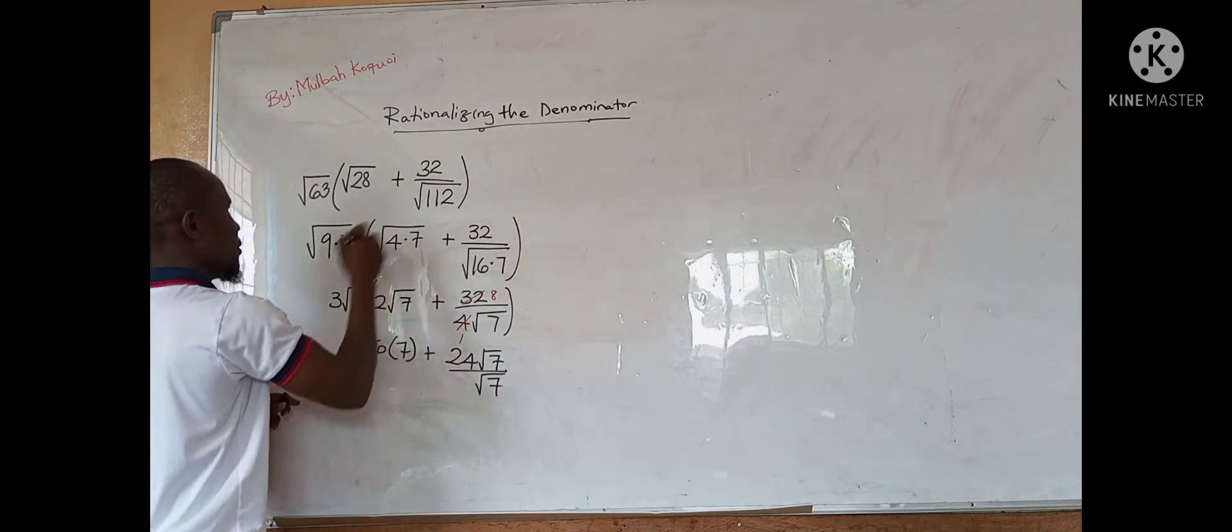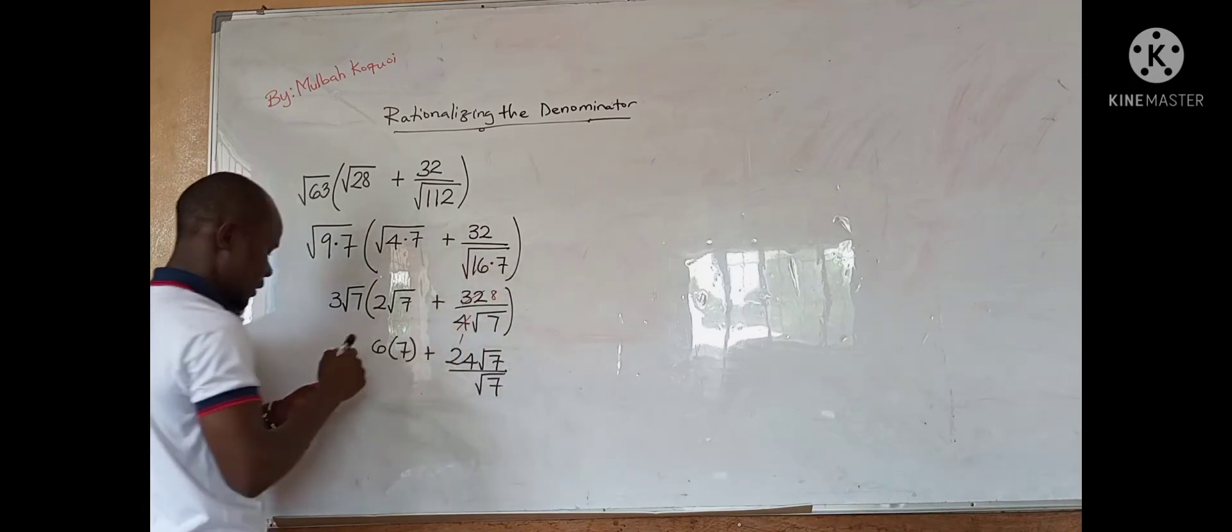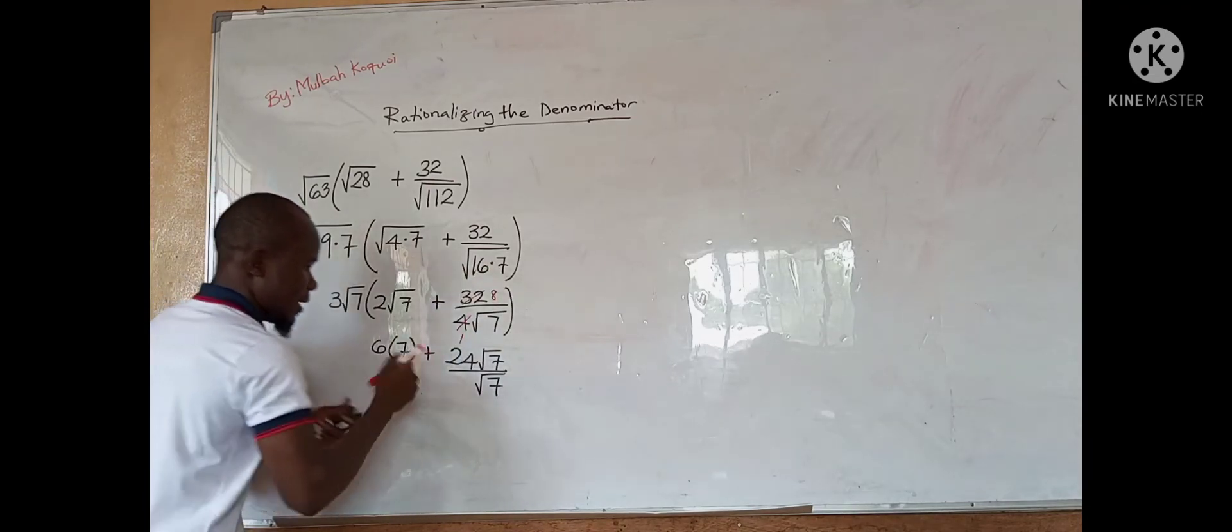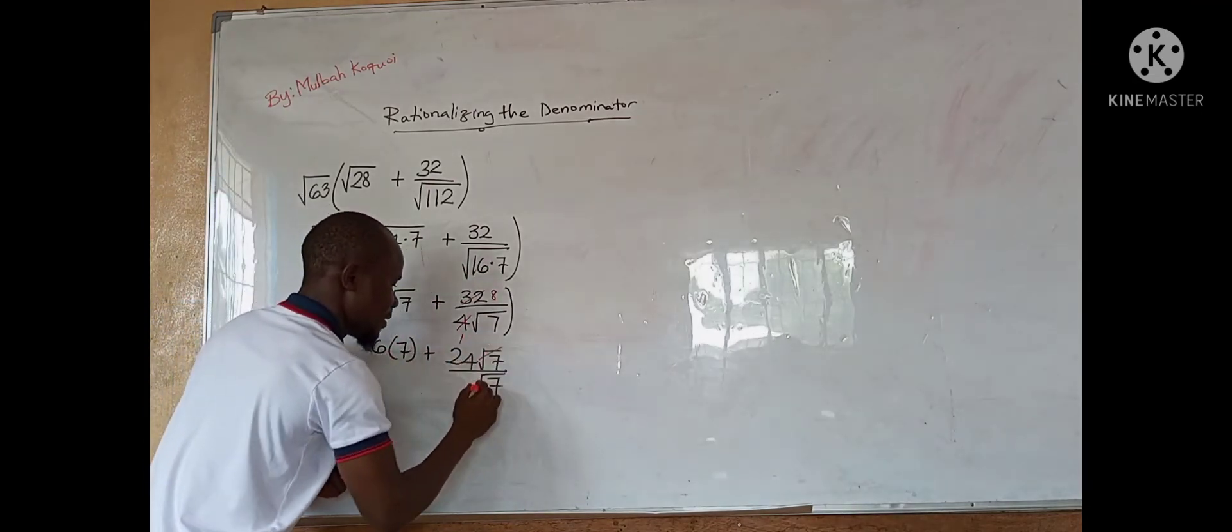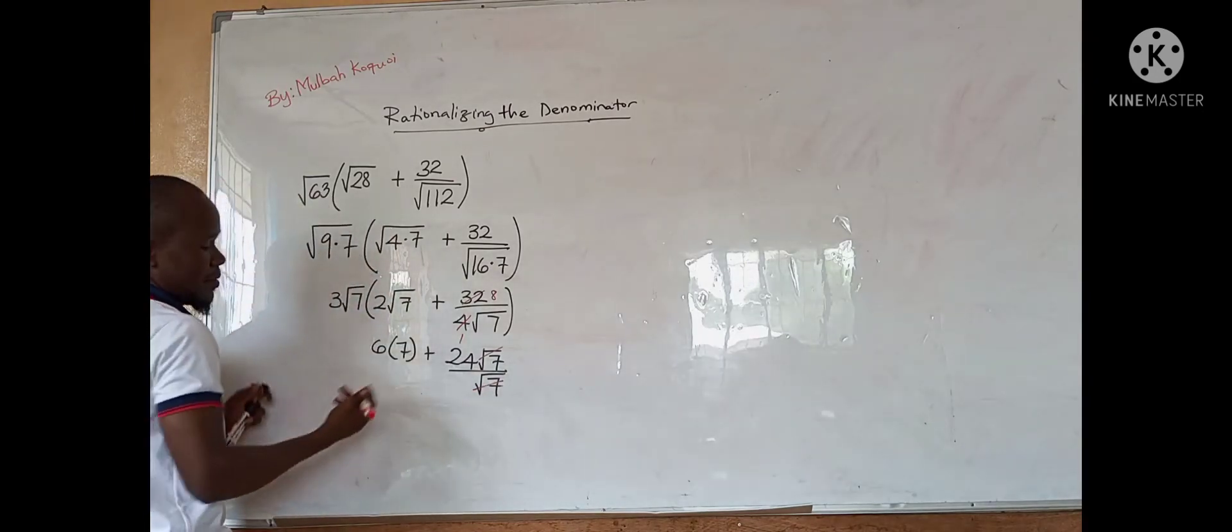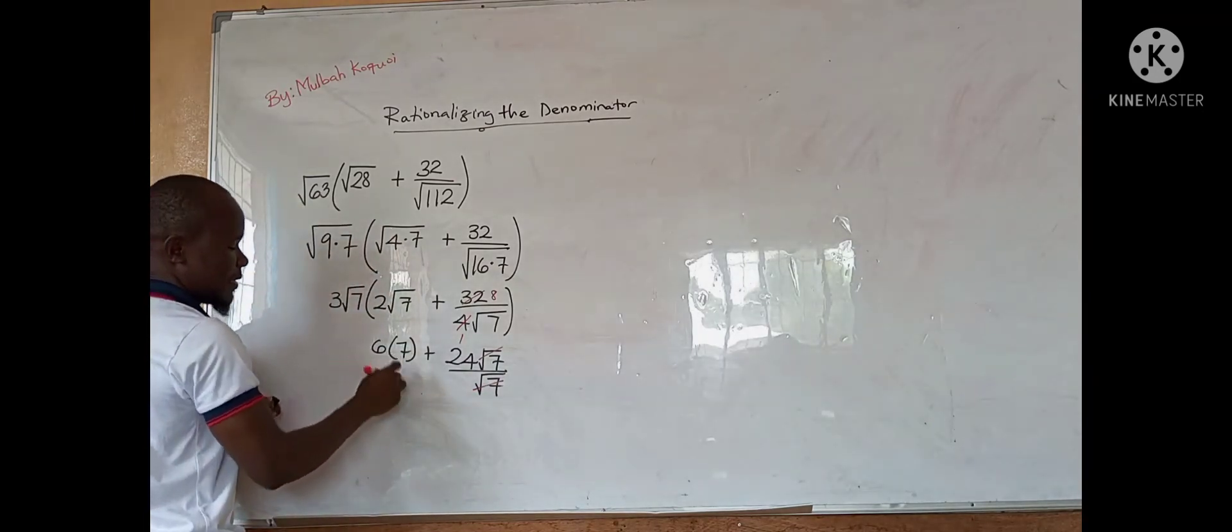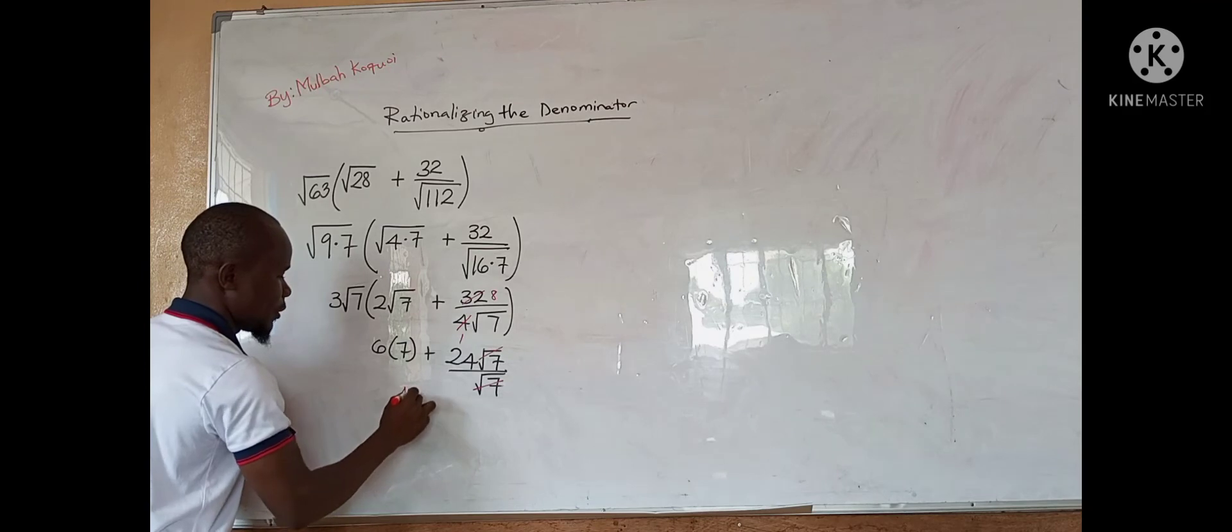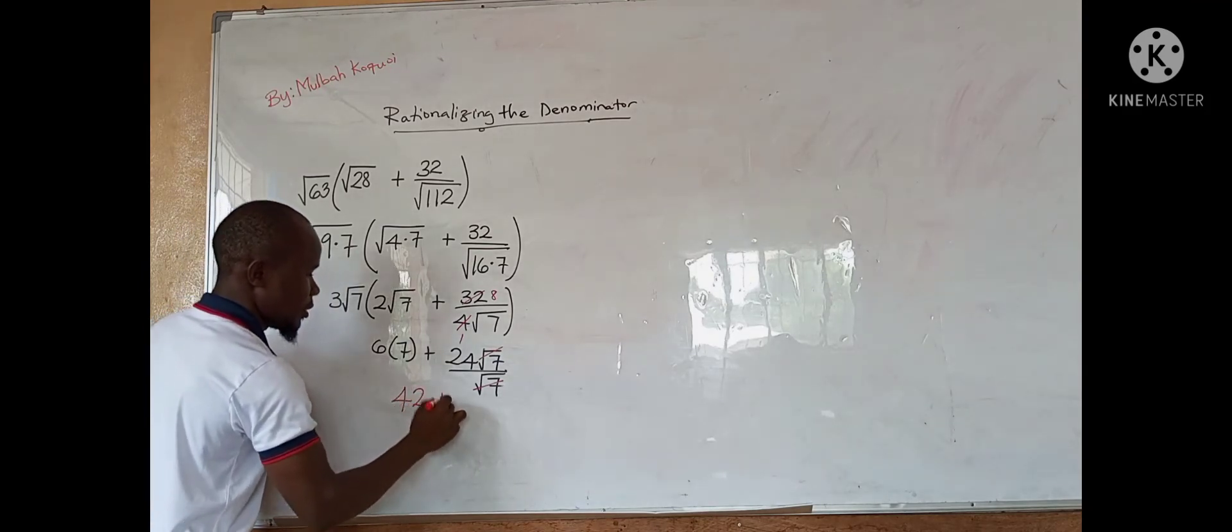But mind you, this can be reduced yet. This root of 7 and this root of 7 can cancel. 6 times 7 gives us 42 plus 24.